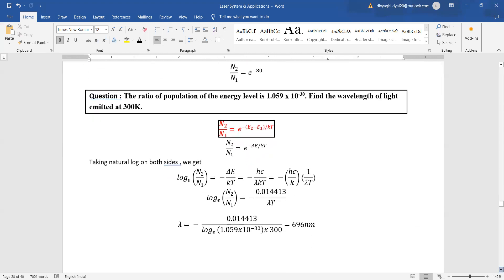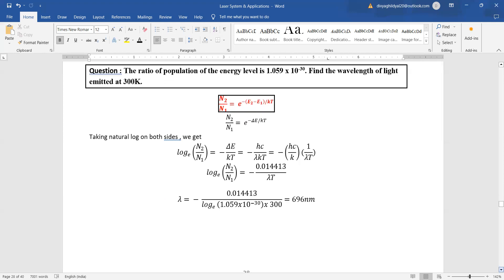The ratio of population of energy level is 1.059 times 10 to the power minus 30. Find the wavelength of light emitted at 300 Kelvin. So n2 upon n1 is equal to e to the power minus e2 minus e1 upon kt. Put the different values and you get the answer.